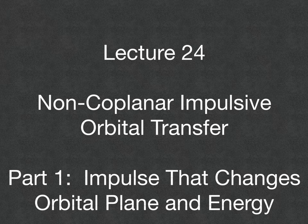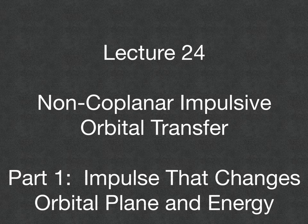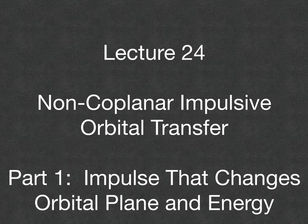The objective of this lecture is to provide the second part of the study of non-coplanar impulsive orbital transfer. This lecture focuses on the development of impulses that change both the orbital plane and the orbital energy. Using this type of impulse, a non-coplanar two-impulse transfer between circular orbits called a Hohmann-type transfer is developed.